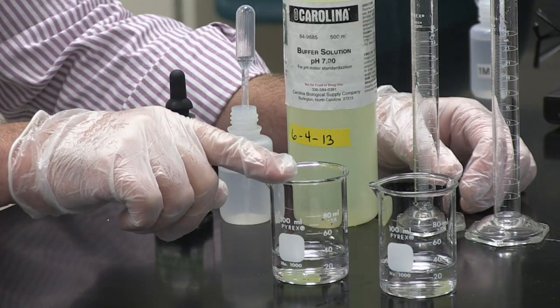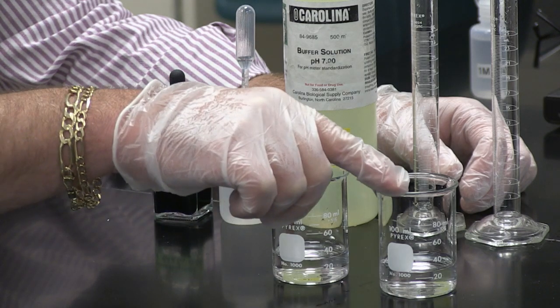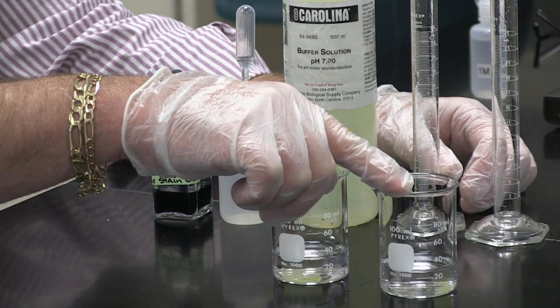So this beaker contains 25 milliliters of the pH 7 buffer solution. This beaker contains 25 milliliters of water.